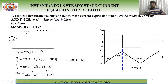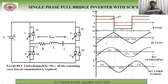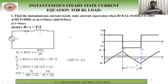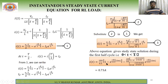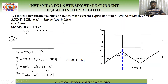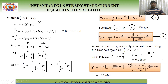Substituting R = 0.5 Ω, L = 0.03 H, f = 50 Hz (T = 0.02 s), Vs = 100 V into the Mode 1 expression, at t = 5 ms = 0.005 s: i(0.005) ≈ 0.73 A. This corresponds to a point approximately at the midpoint of the first half-cycle.